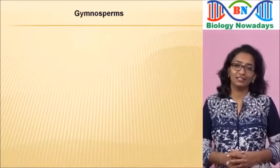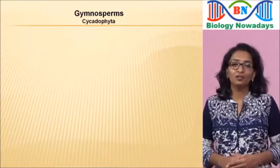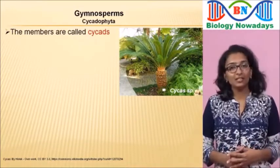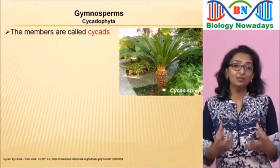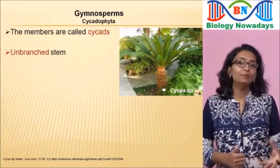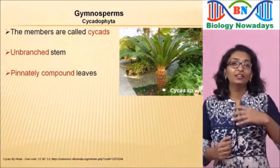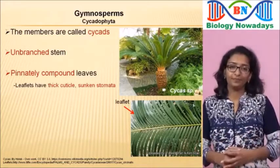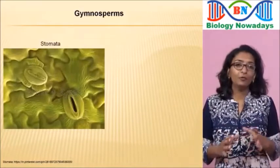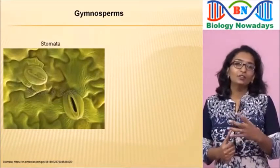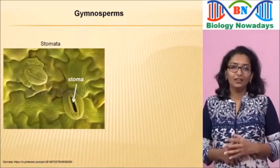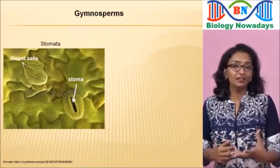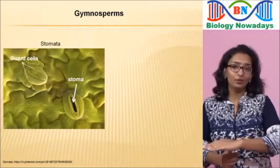The members of Cycadophyta are called cycads. Cycads are palm-like plants found mainly in tropical and subtropical regions. They have an unbranched stem and pinnately compound leaves. Their leaflets have a thick cuticle — a waxy coating — and also sunken stomata. Stomata are small openings meant for gaseous exchange; their singular form is stoma. The opening and closing of stomata are controlled by special cells called guard cells.